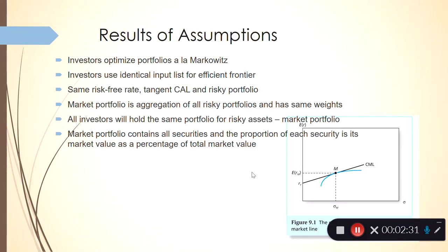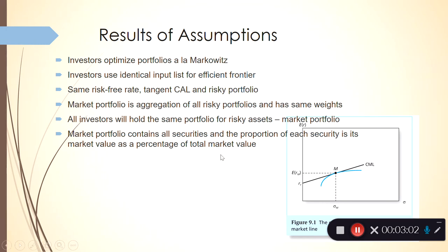The market portfolio contains all securities, and the proportion of each security is quoted as a percentage of the total market value. All investors will choose to hold a portfolio of risky assets in proportions that duplicate the market portfolio. The risk premium on the market is proportional to its risk and the average market risk premium — everyone tries to maximize their Sharpe ratio subject to their degree of risk aversion.